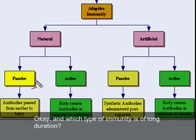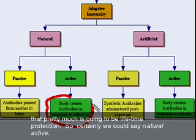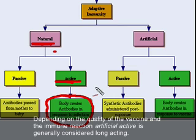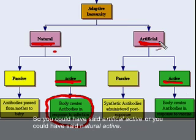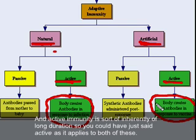Which type of immunity would be of long duration? If the body has created its own antibodies against something, that's essentially lifetime protection. So natural active qualifies. Artificial active — depending on the quality of the vaccine and immune reaction — is also generally considered long-acting. You could say natural active, artificial active, or simply active immunity, since active is inherently of long duration and applies to both.